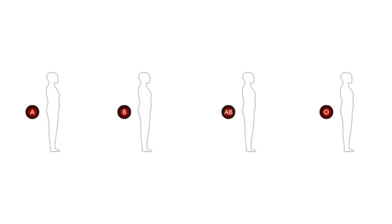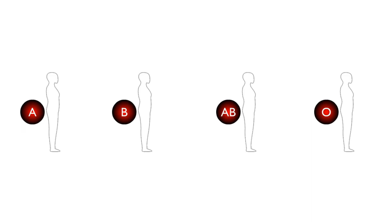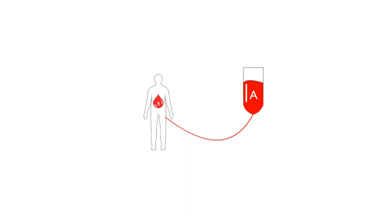We now know why people have different types of blood groups. So the question remains — why is it important? The answer is it is important because if we transfuse a person with the wrong blood group, then he will have a severe post blood transfusion reaction. His blood will form clots and he may die from the reaction as well. Let's try to understand why this happens.